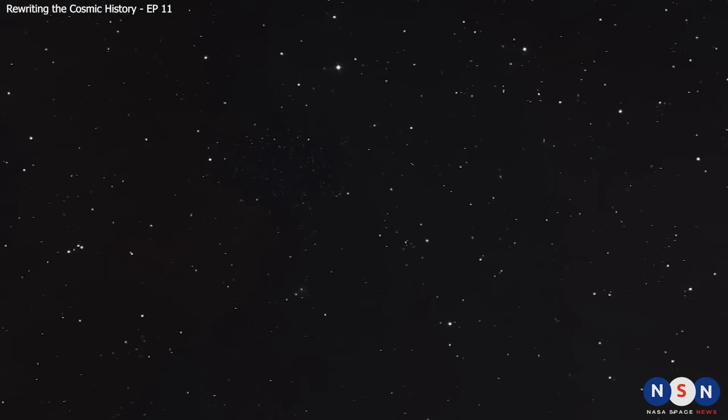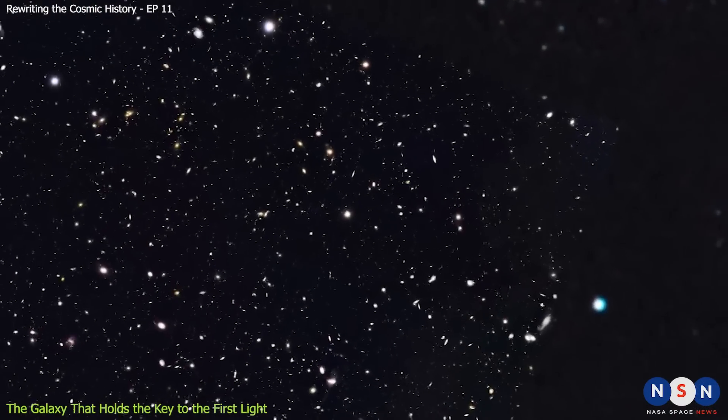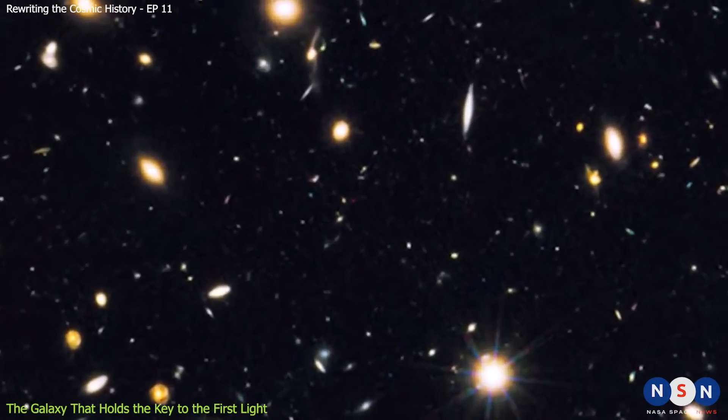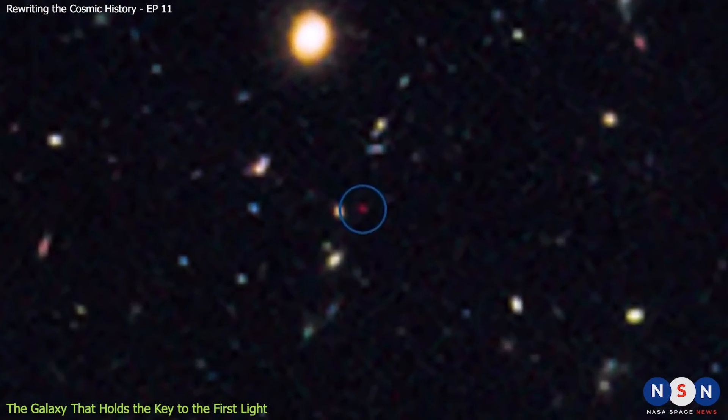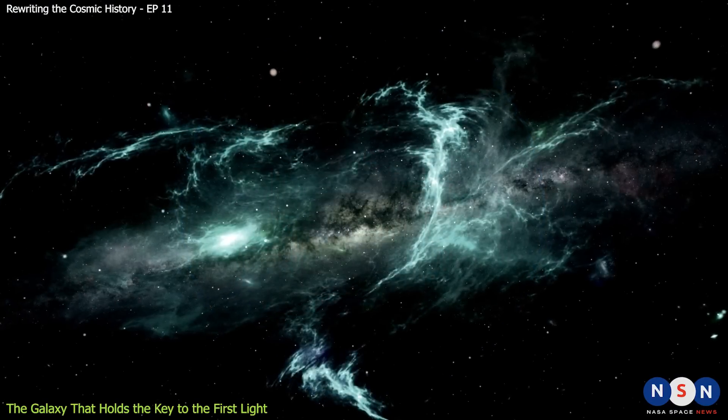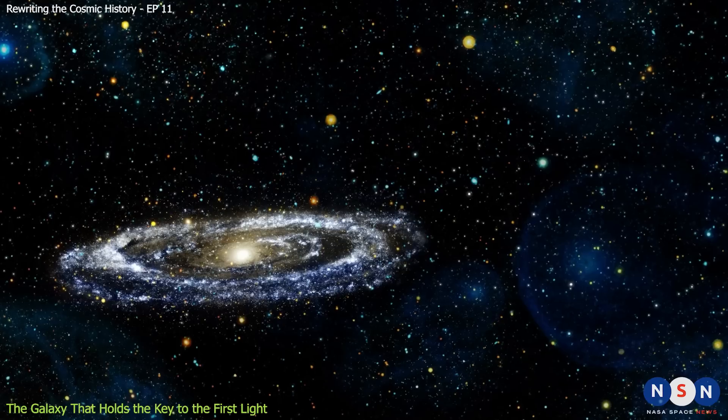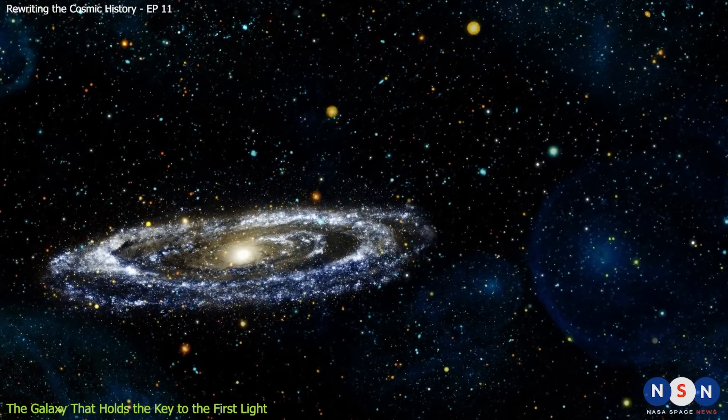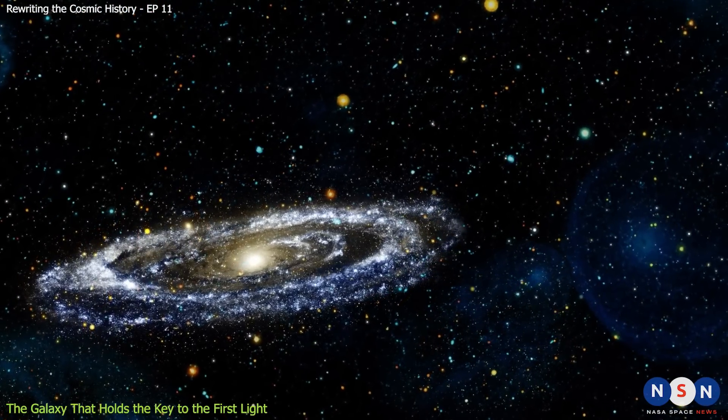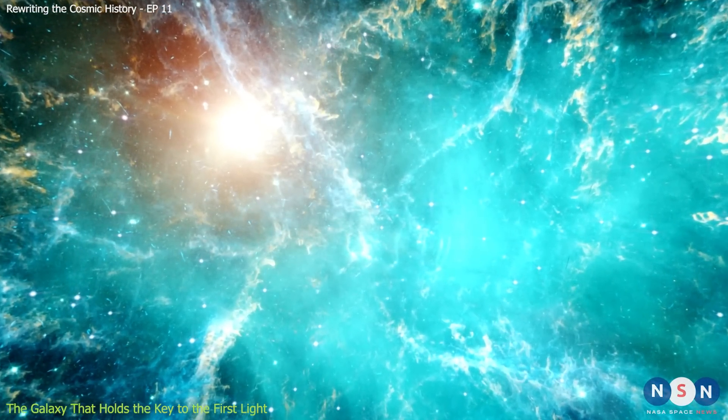One of the most distant galaxies ever observed is called GNZ 11. It is located about 13.4 billion light-years away from us, which means that we see it as it was when the universe was only 400 million years old, or about 3% of its current age. This galaxy is very small compared to modern galaxies like our Milky Way. It has a diameter of only about 3,000 light-years and a mass of only about 1 billion times that of our sun. It also has a very low metallicity, only about 1% that of our sun.